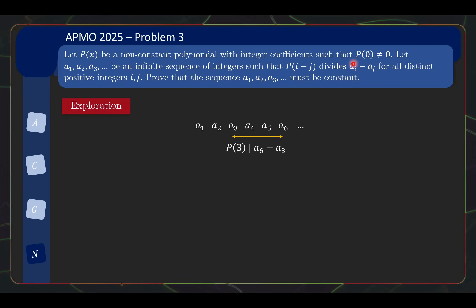For example, if we have indices 6 and 3, then P(6 - 3) = P(3) divides A6 - A3. Similarly, if you look at A2 and A4, then P(2) must divide the difference. And if you look at A1 and A5, then P(4) must divide the difference in value. If this property holds for all pairs i, j, then this sequence must be constant — that's what you need to prove.